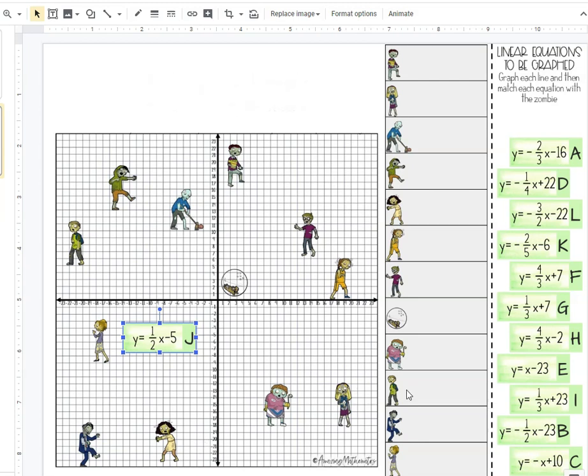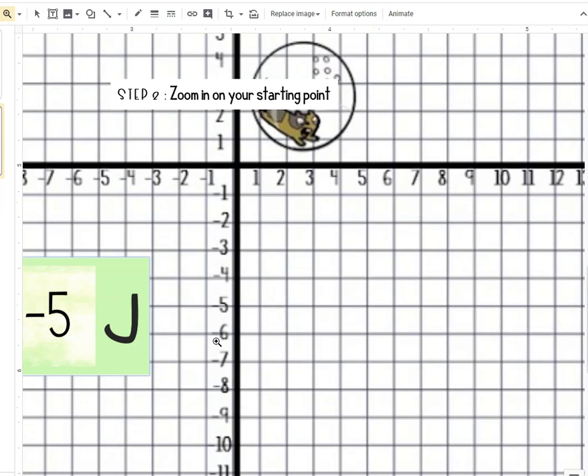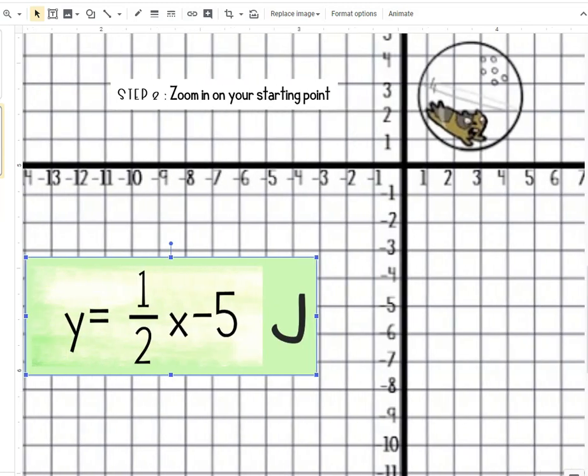Once you have placed your equation near the correct starting point, you're going to want to zoom in. So we're going to go to this zoom tool and left click. That's going to change my pointer to a zoom tool and I'm going to zoom in. I like to do two clicks. Notice my cursor is still the zoom tool. To get rid of that I'm simply going to press the escape key on the keyboard. Now I can readjust a little bit so I can see everything I need to see, and we're ready to graph our line.